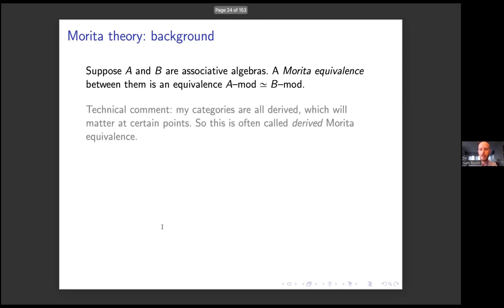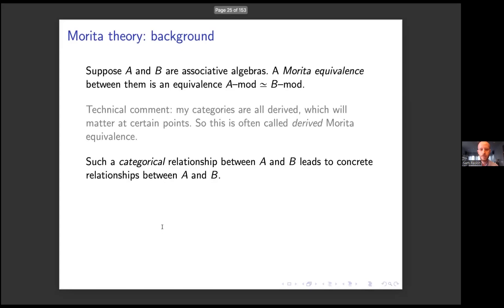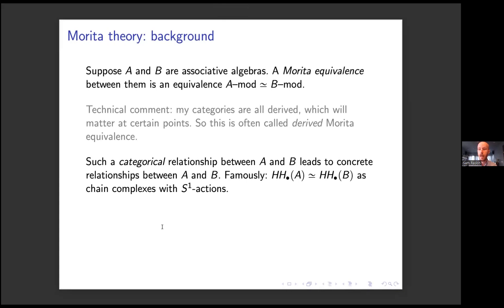A Morita equivalence between them is an equivalence between their categories of modules — an equivalence between A-mod and B-mod. Just a technical comment: all of my categories are derived, and this matters at certain points, so sometimes this is called derived Morita equivalence. Such a categorical relationship between A and B, even though it maybe looks abstract, can lead to really concrete relationships between A and B. Something more concrete you can get is that the Hochschild homology of A is going to be the same as the Hochschild homology of B, compatible with some subtle structure of the S1 action. The reason is that Hochschild homology can be constructed using the category alone — it depends only on A-mod, not on A itself.